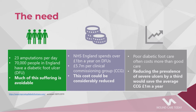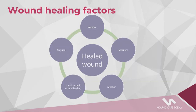As you can see from this slide, we are losing 23 legs a day within England, and much of this suffering is avoidable. In England we're spending over one billion pounds a year on diabetic foot ulcers, and this can be considerably reduced. Poor diabetic foot care often costs more than good care, so if we can reduce the prevalence of severe ulcers we could save the average CCG one million pounds a year.